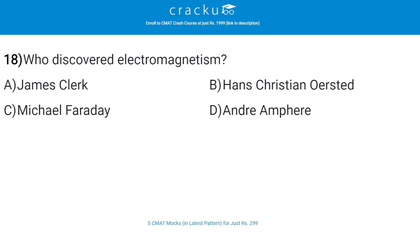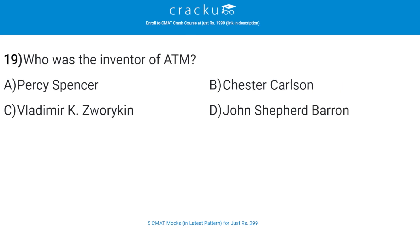Who discovered electromagnetism? The correct answer is B, Hans Christian Ørsted. It was discovered in 1820 that an electrical current in a wire from a battery caused a nearby compass needle to deflect.